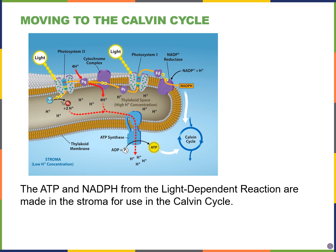All of the previous section was part of the light dependent reactions. This included the photosystems, our electron transport chains, and the generation of NADPH and ATP.